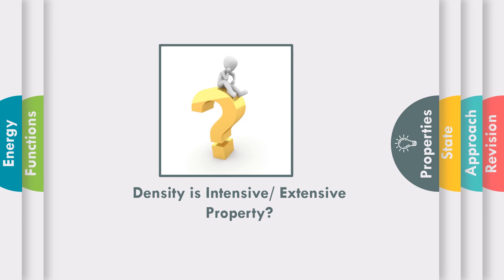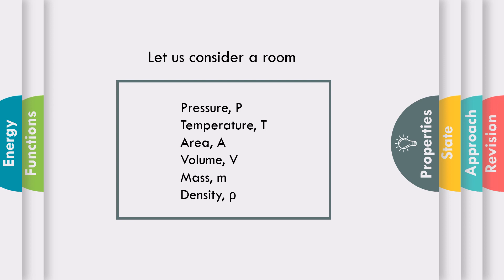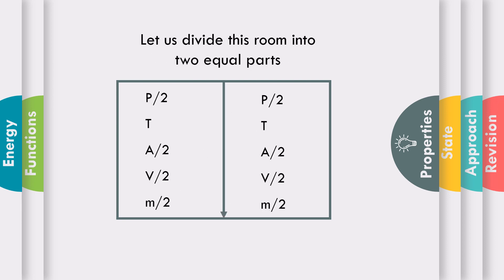Let us take an example: is density an intensive property or extensive property? Assume a room whose pressure is P, temperature is T, area is A, volume is V, mass is m, and density is rho. Let us divide this room into two equal parts. The pressure of the first half will be P, the second half will also be P. Similarly, temperature of both halves will be T. Area of each half will be A/2, volume will be V/2, and mass will be m/2.